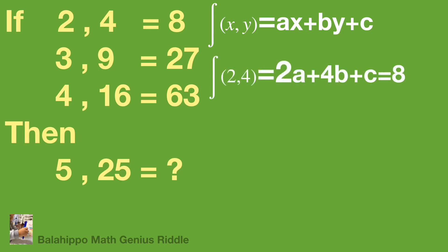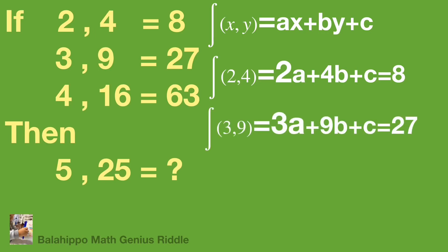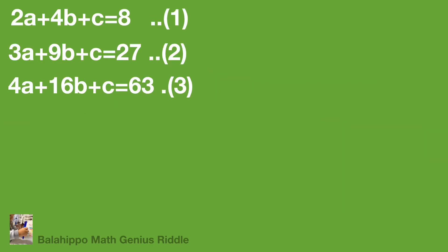The two left-hand side numbers are x and y. Then we have f(2, 4) = 2a + 4b + c = 8. At the same time, we also get another two equations. We name these new equations as equation 1, 2, and 3.